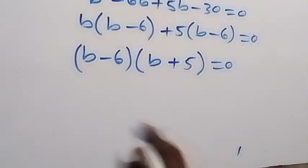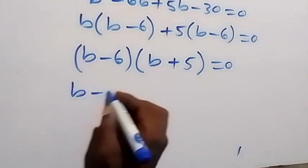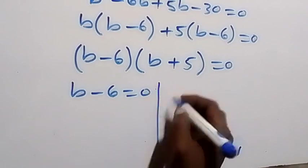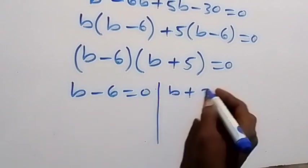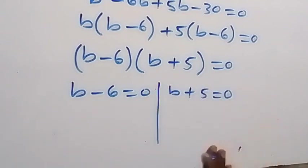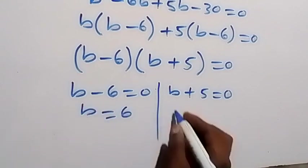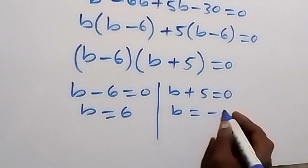So, two cases here. We have B minus 6 equals to 0. Or, we have B plus 5 equals to 0. So, from here, B is equals to 6. And here, B is equals to minus 5.